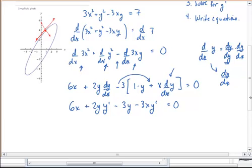And I'm going to separate my y prime terms from the rest of the mix. So I'll have this 6x minus 3y, I'll leave that on the left. And I'll just subtract over the other two terms to the right side. And that will be 3xy prime and minus 2y, y prime.